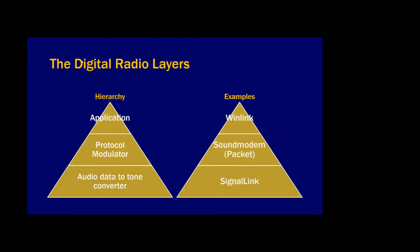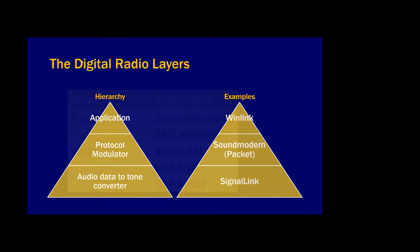The hierarchy I'm talking about is: the application, the protocol modulator, and the audio tone converter. The application might be Winlink, the protocol might be packet, and the audio tone converter is the SignaLink. You could take out packet and put in VARA and everything else would work — they're all independent. You don't get into the situation where you think you're replacing the SignaLink with a sound modem, because the SignaLink is at the audio level and sound modem is at the protocol level.